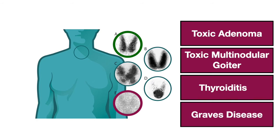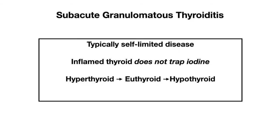Let's move on to image E, which is caused by thyroiditis — specifically, subacute granulomatous thyroiditis. This is a typically self-limiting condition often triggered by a viral infection. The thyroid is highly inflamed and often very tender to touch on clinical exam, which is a highly tested exam topic. Because the thyroid gland is inflamed, it does not trap iodine — instead, it is releasing preformed thyroid hormone. This leads to an initial hyperthyroid phase as all the preformed thyroid hormone is released.